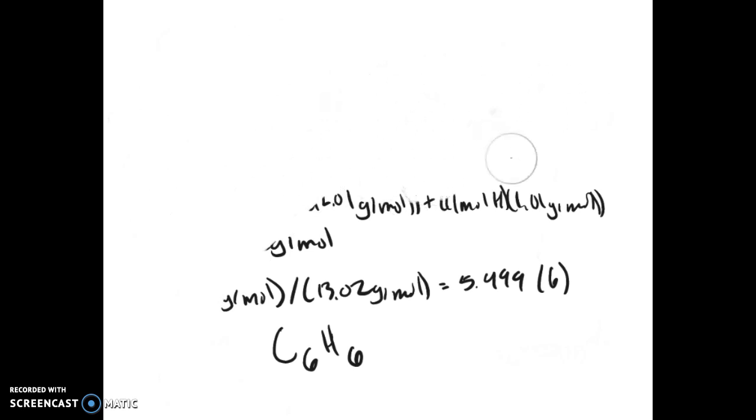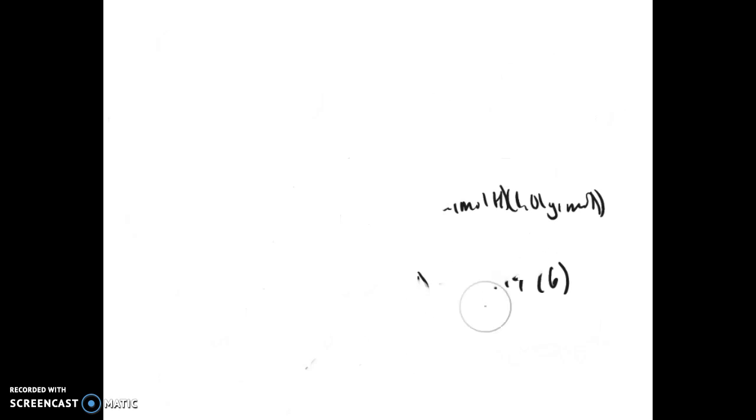Now to write a molecular formula out in words, the less electronegative element goes first, and it will have a prefix, but only if it's greater than 1.